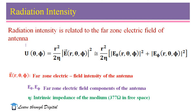Radiation intensity is related to the far-zone electric field of the antenna. U(θ, φ) is equal to R squared divided by 2 eta, multiplied by the magnitude squared of the far-zone electric field E(R, θ, φ). This electric field vector consists of E-theta and E-phi components, which are the far-zone electric field components of the antenna. Here, eta is the intrinsic impedance of the medium — 377 ohms for free space.